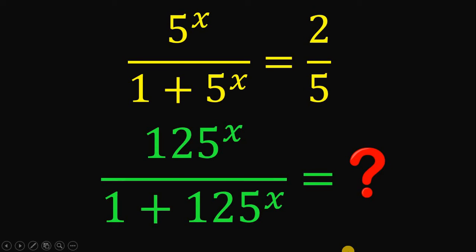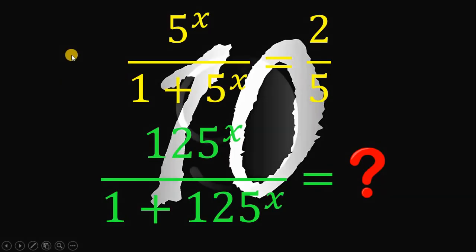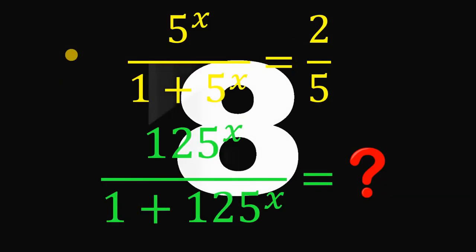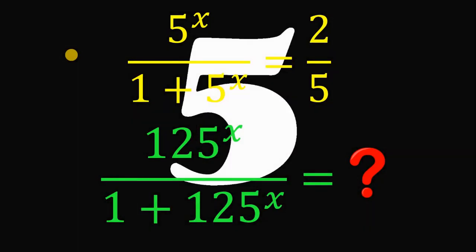Can you solve this math challenge? Here's the question: What is the value of the expression 125 raised to x over 1 plus 125 raised to x, given that 5 raised to x over 1 plus 5 raised to x equals 2 over 5? You can pause this video if you want to give this problem a try.